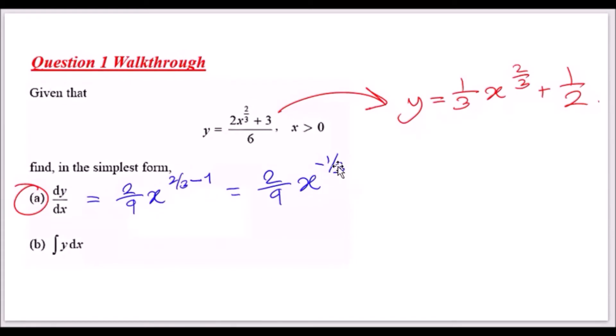If you differentiate 1/2, that gives you zero, because differentiating a constant is always zero—there's no x terms attached. So that's easy, that's dy/dx done.